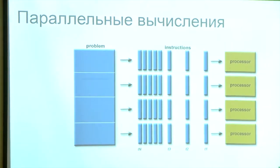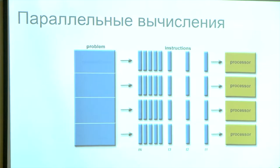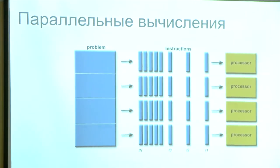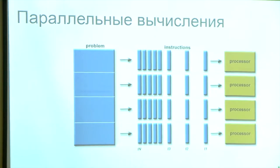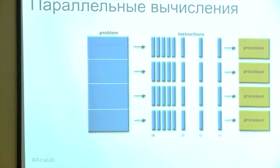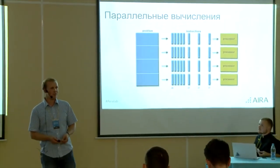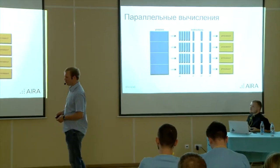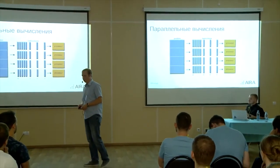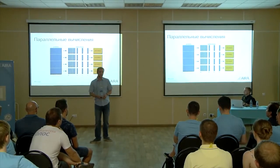Modern designers of software increase the number of computational cores of central processors. This leads to a situation where all more-or-less up-to-date desktops have between 4 and 8 concurrent data flows. Consequently, each more-or-less large software product consists of concurrent computations. It is a daunting experience to imagine the difficulties a programmer faces working with an imperative language during concurrent program design.